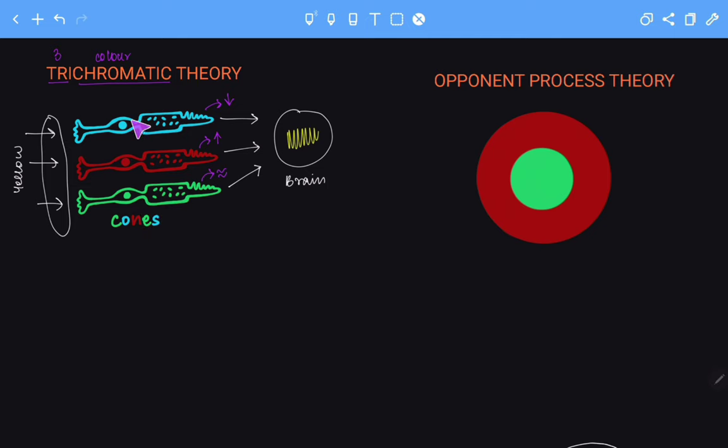It goes to stimulate the three cones. The cones get stimulated based on the type of light that is being reflected. The three cones will have varying degrees of stimulation. These stimulations are then passed on to the brain. The brain sums up all these stimulations and finally deduces the color, which is yellow in this case.